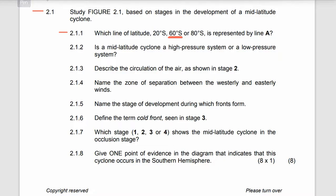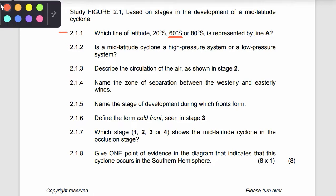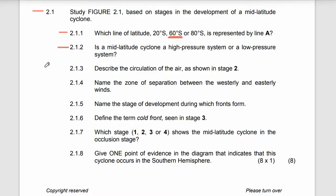So 60 degrees south — that's the line of latitude represented by line A. This is where mid-latitude cyclones form. Moving to 2.1.2: is a mid-latitude cyclone a high pressure system or a low pressure system? A mid-latitude cyclone is a low pressure system.